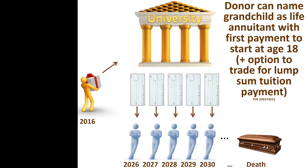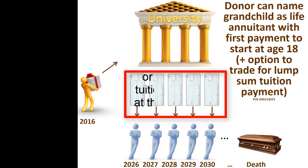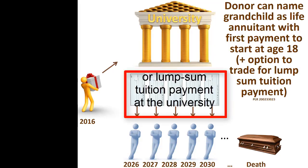One creative variation on a charitable gift annuity allowed a donor to name his grandchild as the life annuitant, with the lifetime payments to begin at age 18. This particular annuity had an additional provision that allowed the grandchild to trade the lifetime income for an equivalent lump-sum tuition payment at the donor's alma mater. Because the annuity was issued by the donor's alma mater, this created an attractive incentive for the grandchild and a potential double benefit for the university.